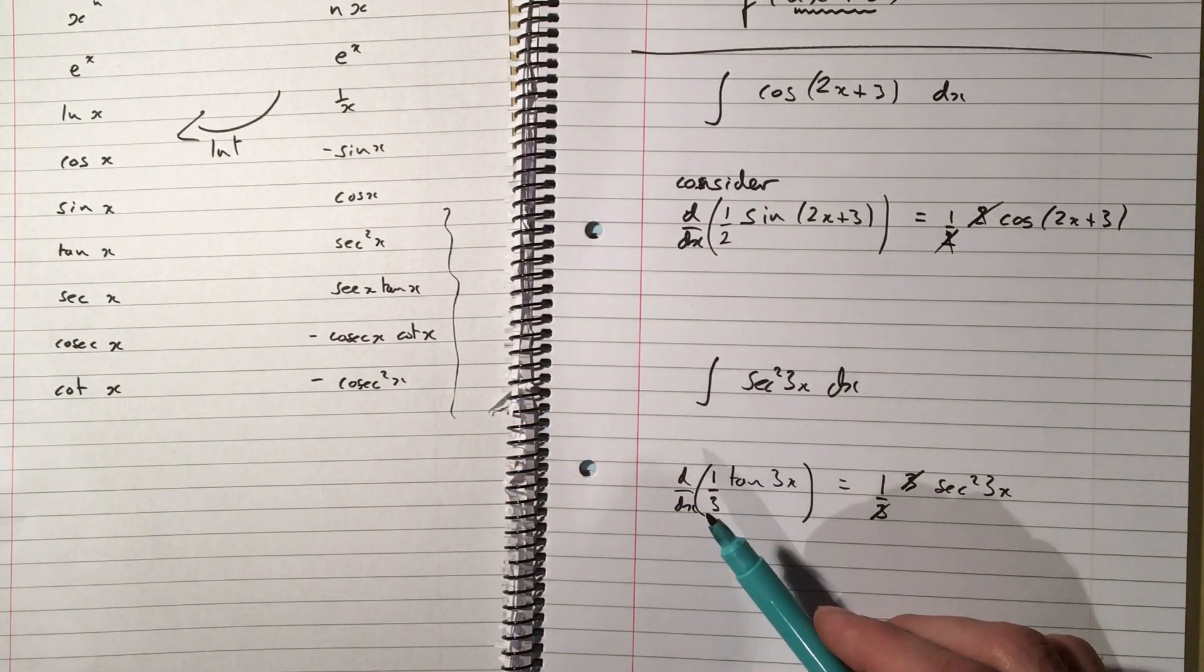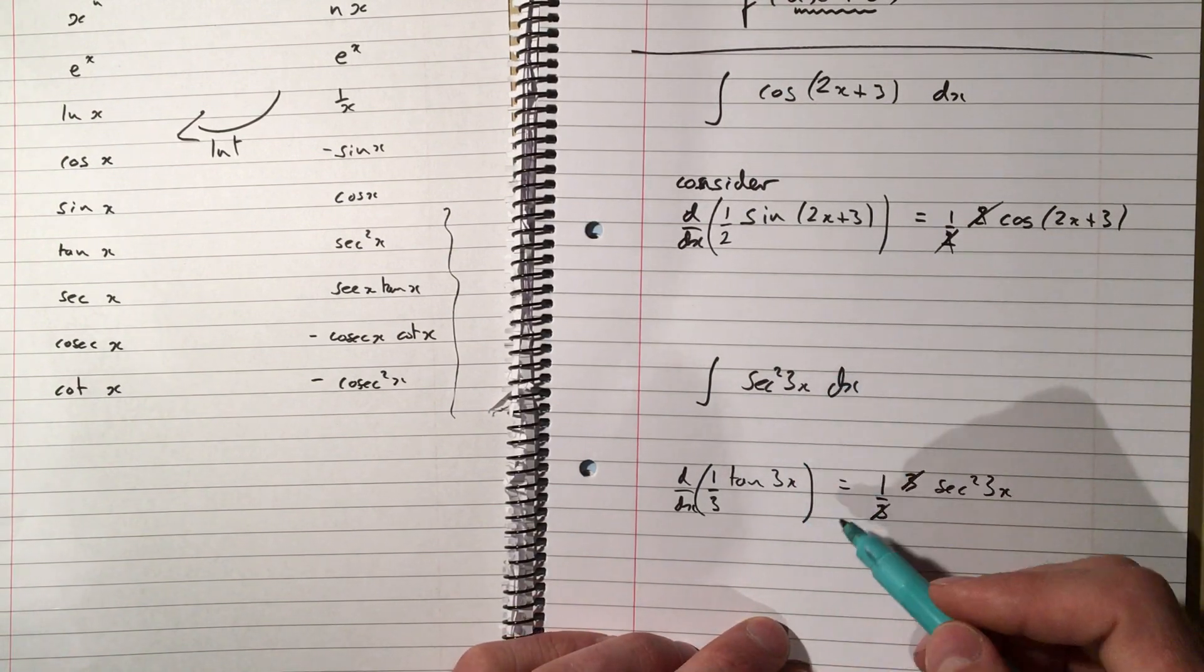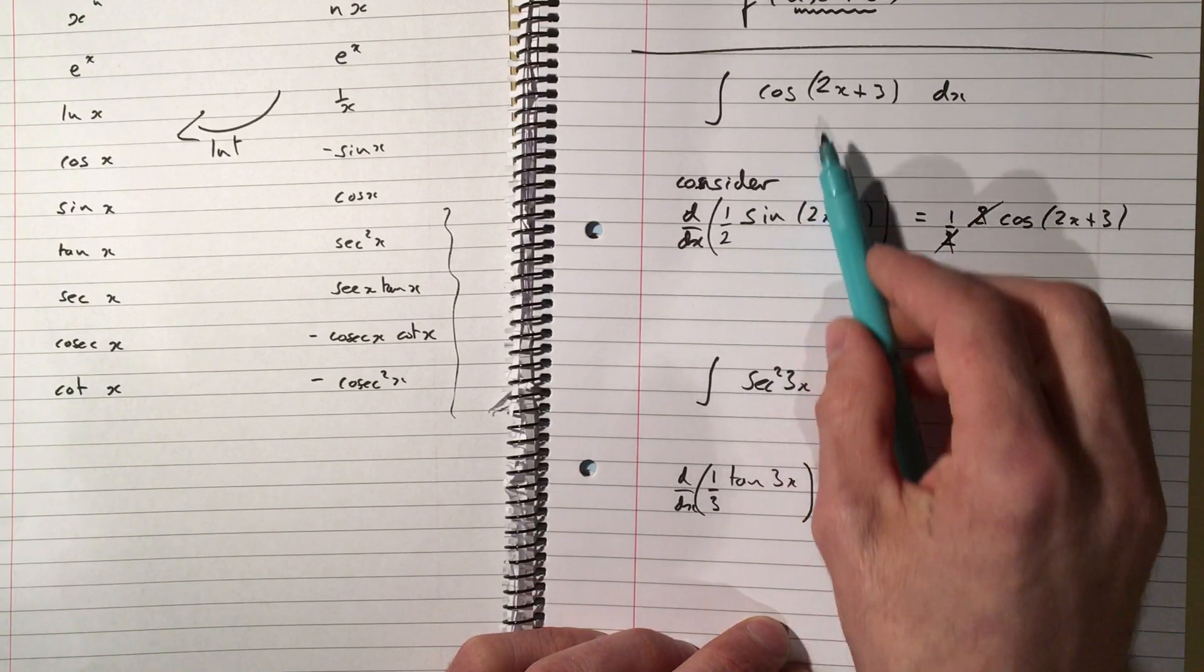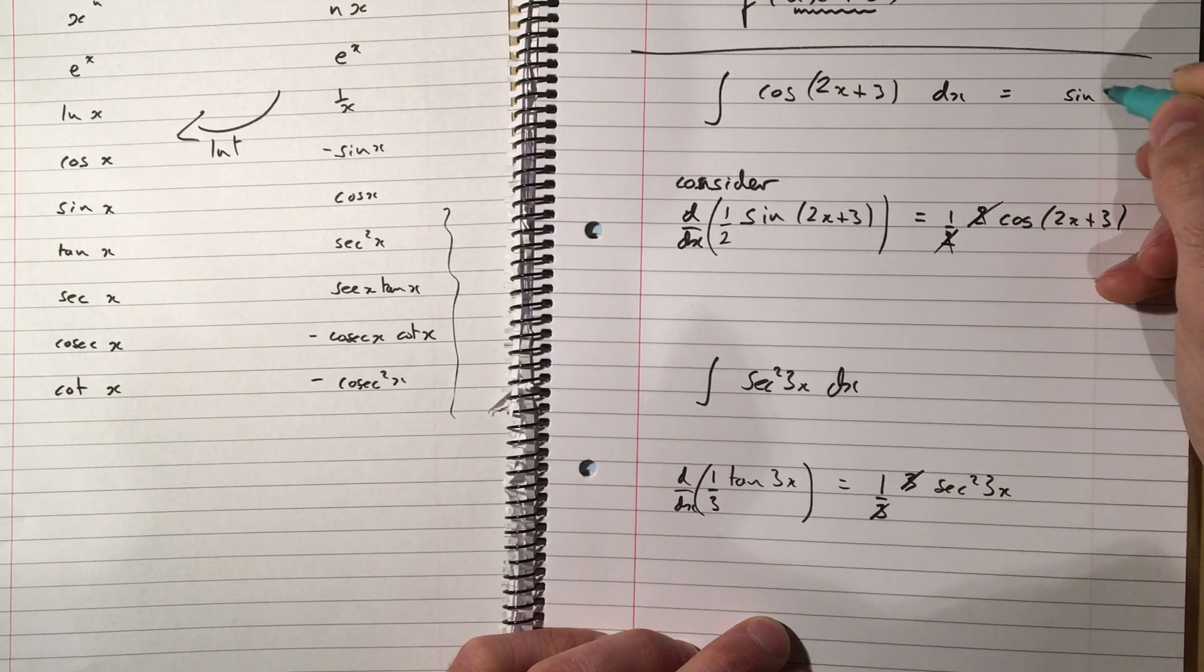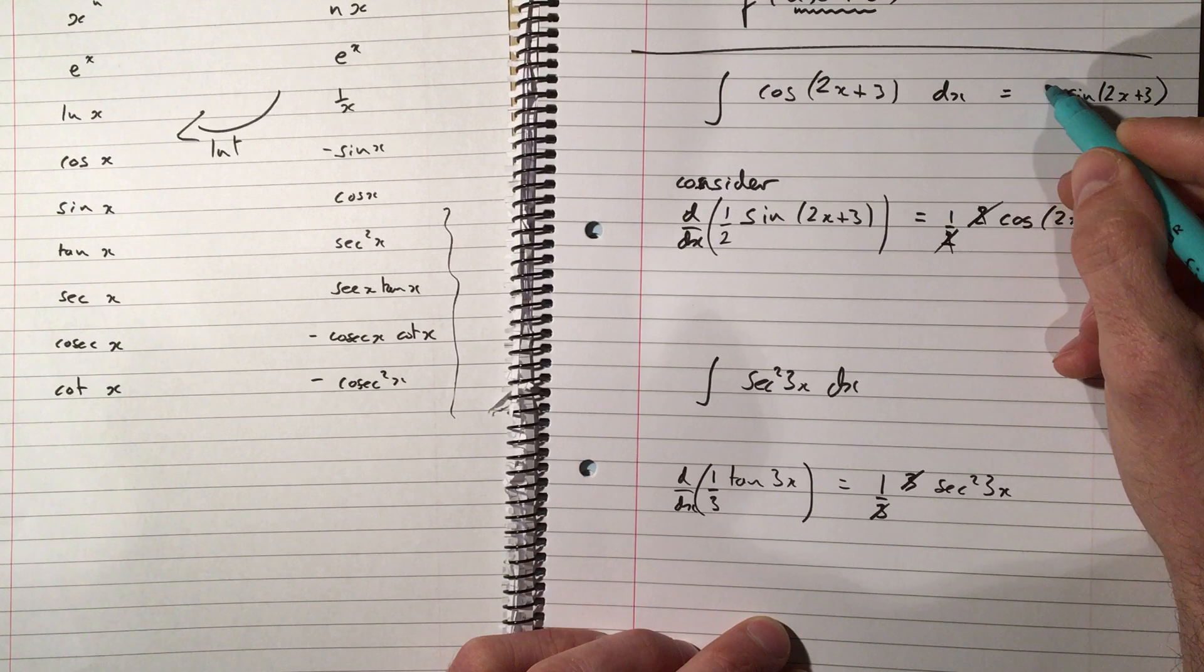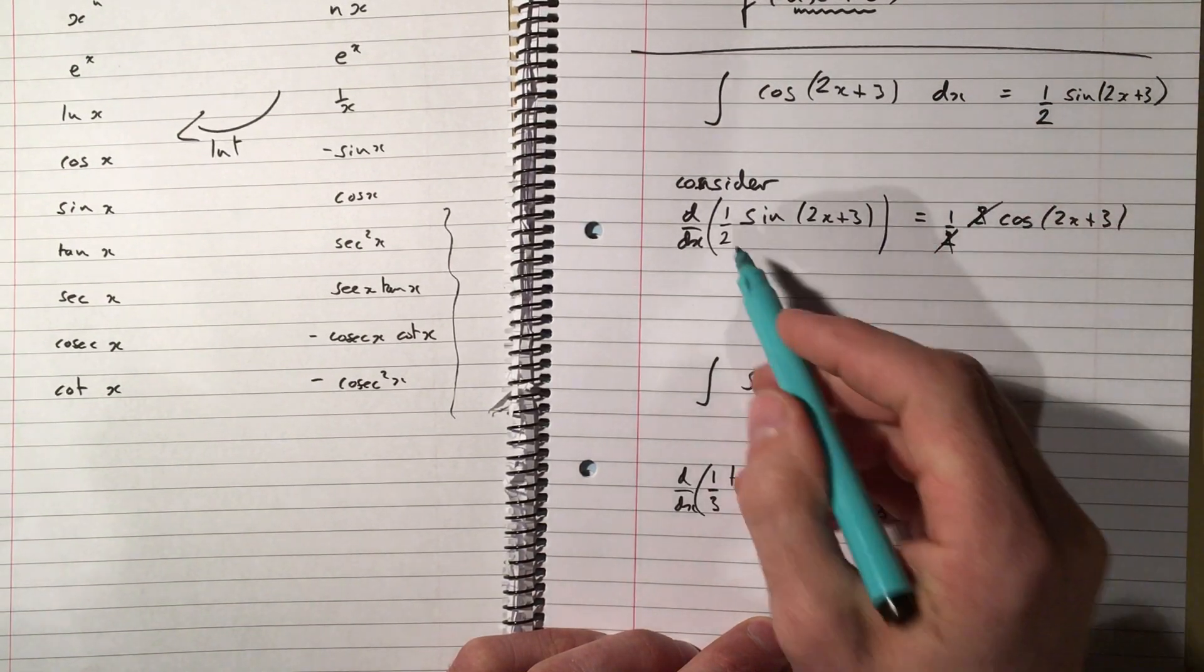Think of, what have you got? What could it have come from? Now, after you've done a few of these, you'll find that actually, if there's a linear term, what we have to do is just cos integrates to sine, and then divide by the coefficient of the x. And that trick will always work.